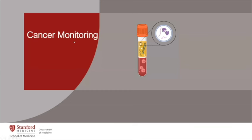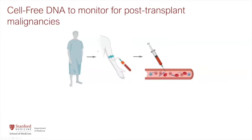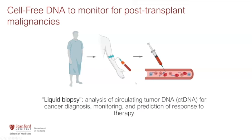Finally, the third part: cancer monitoring. Cancer is one of the leading causes of death after transplantation by about 10 to 15 years post-transplant, and its incidence is much higher in transplant patients. Skin cancers, post-transplant lymphomas, and others flourish because the immune system also surveils against cancer, and immunosuppression allows them to proliferate. There has been great interest in using cell-free DNA for the 'liquid biopsy' — analysis of circulating DNA from tumors for cancer diagnosis, monitoring, and assessing response to therapy. Circulating tumor DNA assays have been developed and tested extensively in oncology.